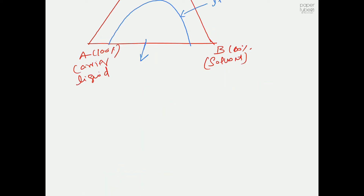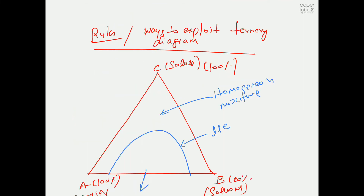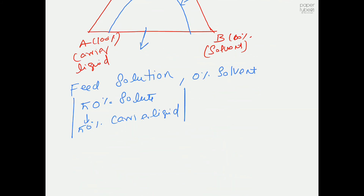Let's say we have a feed solution with zero percent solvent, 50% solute, and therefore 50% carrier liquid. To locate this feed point on the ternary diagram: zero percent solvent means we're on the base line (the C-A edge, which is your zero-percent-B line). Fifty percent solute means we go halfway along that axis.